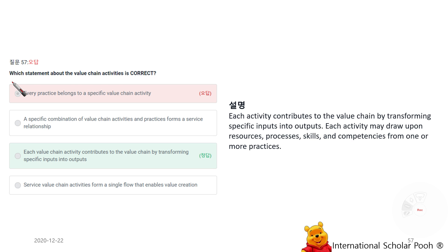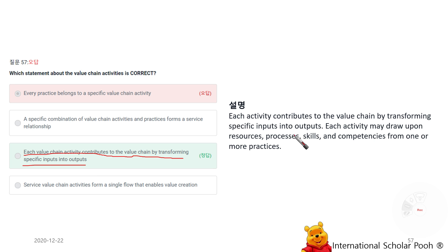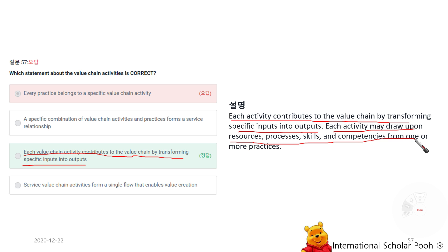Which statement about value chain activities is correct? Each value chain activity contributes to the value chain by transforming specific inputs into outputs. Each activity may draw upon resources, processes, skills, and competencies from one or more practices.